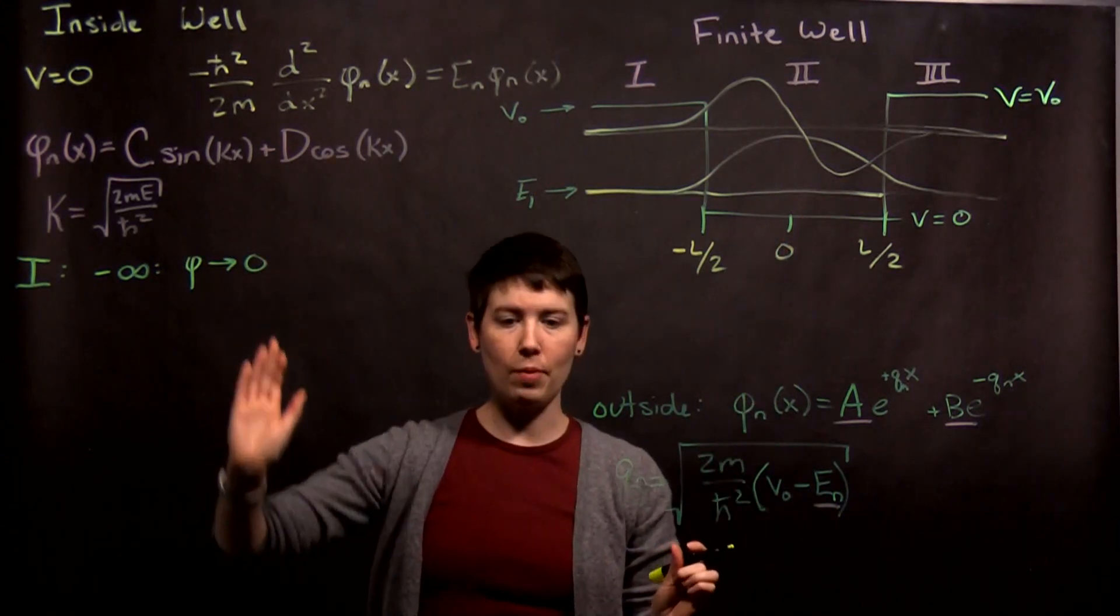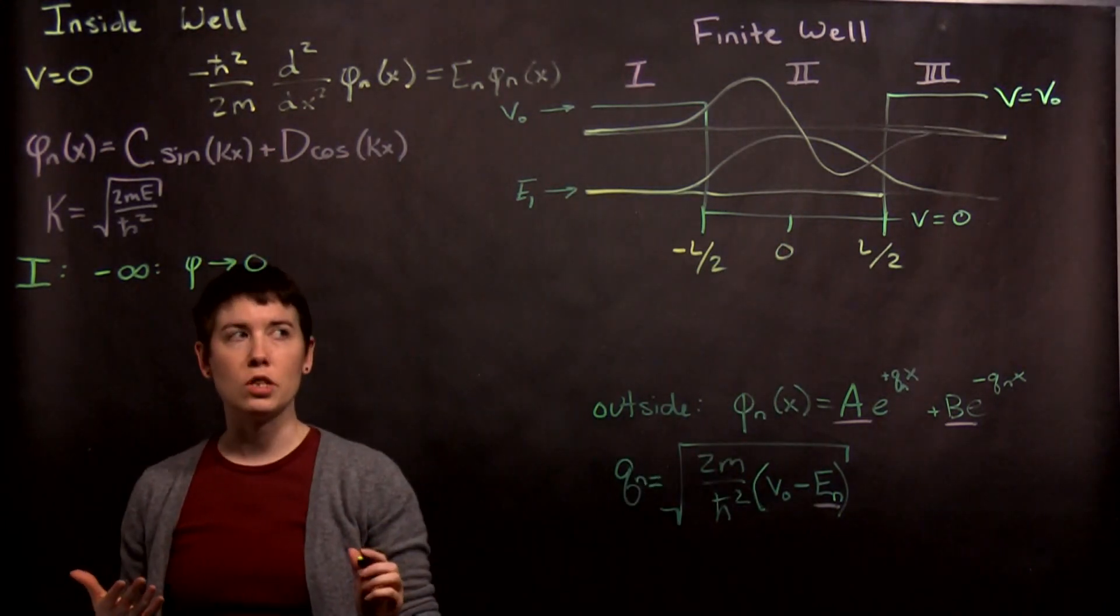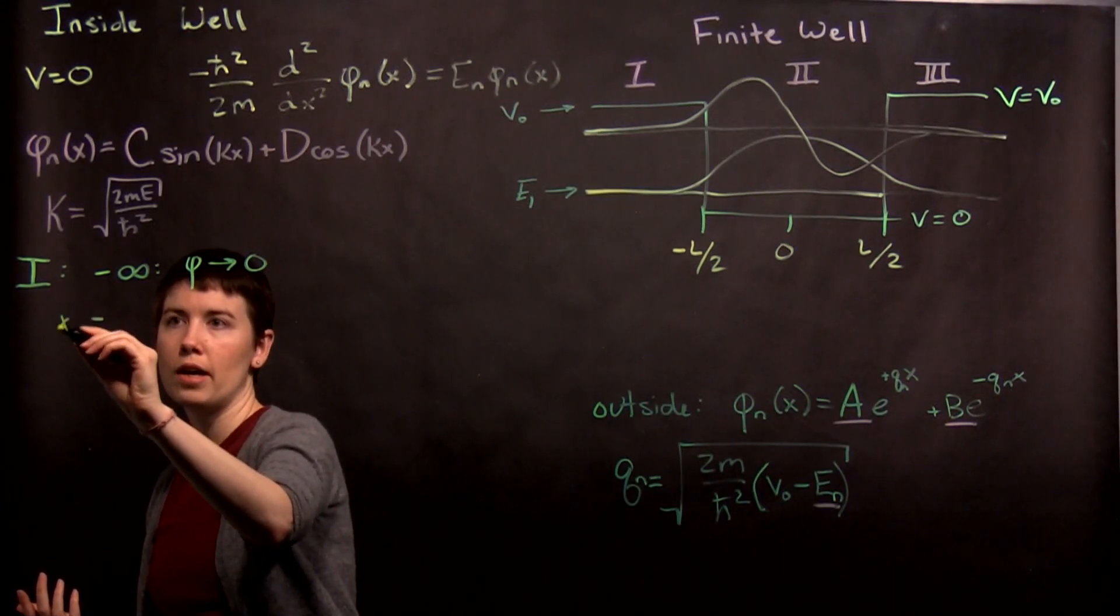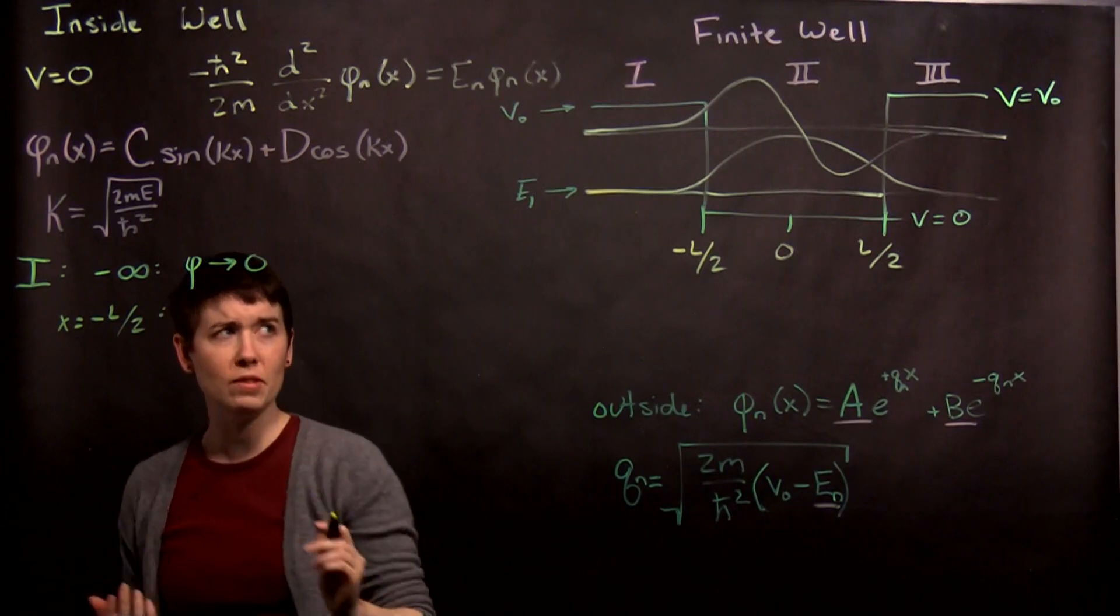So that's important, this is a boundary condition. So the second boundary condition is in fact at x is equal to negative l over 2. What happens there?